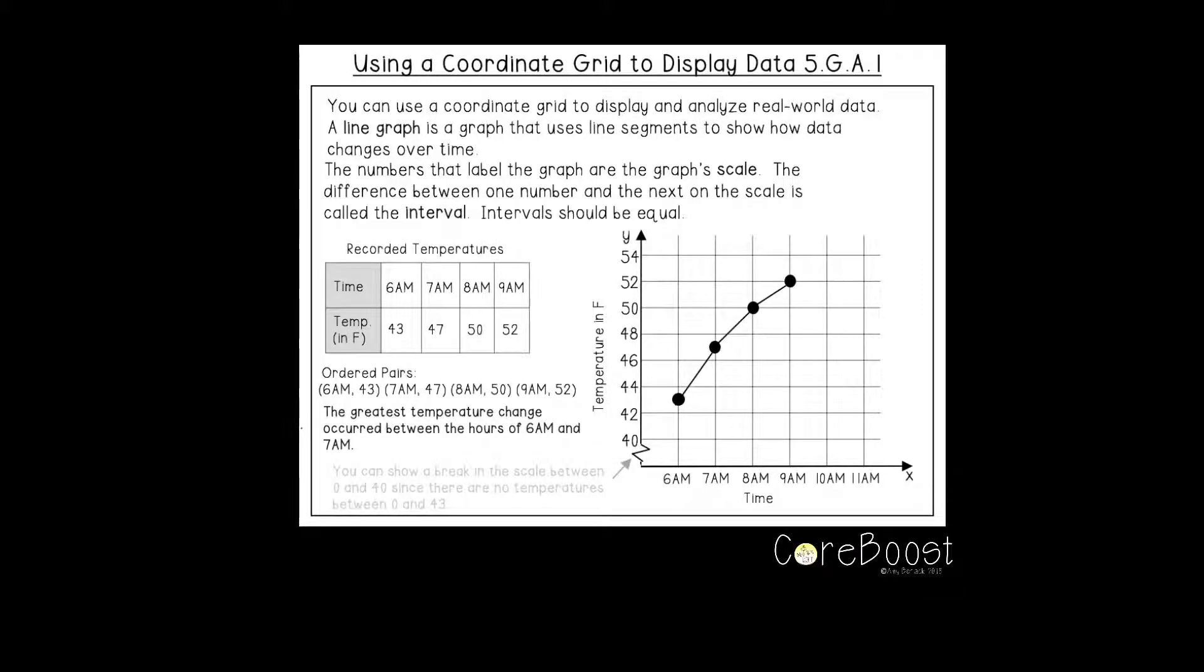You can use a coordinate grid to display and analyze real world data. A line graph is a graph that uses line segments to show how data changes over time. The numbers that label the graph are called the graph's scale.